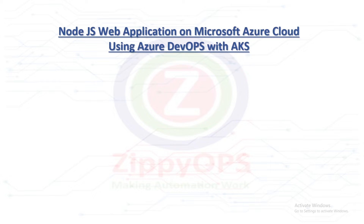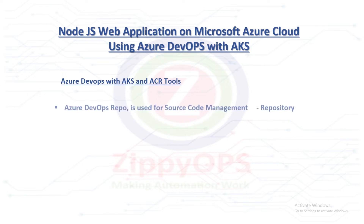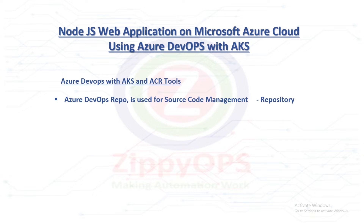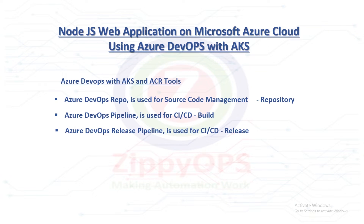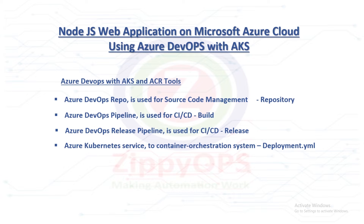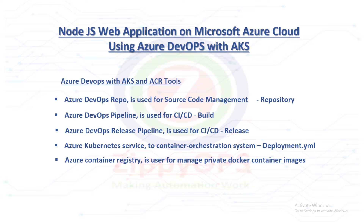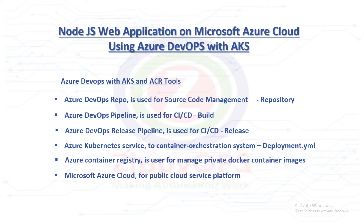The complete process is orchestrated through the Azure DevOps pipeline. The tools used in this NodeJS application deployment are: Azure DevOps Repo for source code management, Azure DevOps Pipeline for continuous integration and build, Azure DevOps Release Pipeline for continuous deployment and release, Azure Kubernetes Service for Kubernetes container orchestration, Azure Container Registry for private registry of Docker container images, and Microsoft Azure Cloud for public cloud service platform.